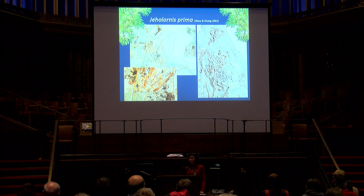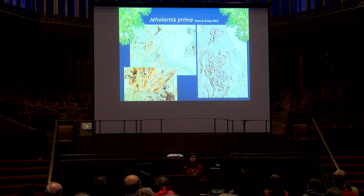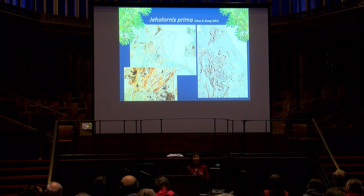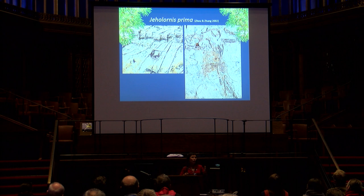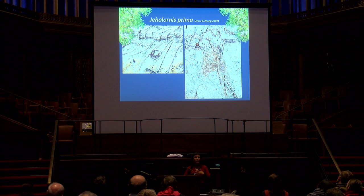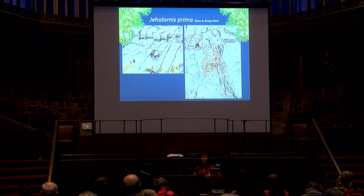Jeholornis prima is the second most primitive bird within the avian tree, only more derived than Archaeopteryx. The holotype preserved a large number of seeds described as in the stomach, so we have known this taxon was an herbivore. Later, upon comparison with specimens of other taxa preserving seeds, I surmised that the seeds in the Jeholornis holotype were actually in the crop rather than the stomach. I visited the Tianyu Museum — the largest dinosaur museum in the world — examined numerous specimens, and based on my observations, inferred that in fact all the specimens preserving seeds have them inside the stomach, which strongly suggests Jeholornis lacks a crop.